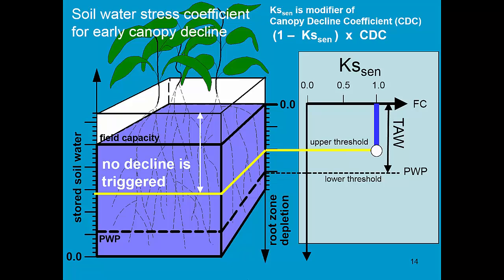Another Ks coefficient takes care of early canopy decline. As long as the water content is above the yellow line, Ks senescence is one and the canopy decline coefficient is zero. There is no early canopy decline. But when the water content drops below the yellow line, early canopy decline is triggered and the crop will start to lose leaves. The thresholds for early canopy decline coefficient and for the leaf expansion coefficient are conservative crop parameters and the user does not have to adjust them.